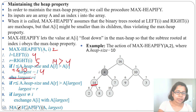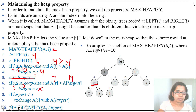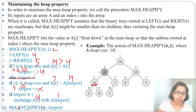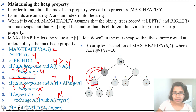Next we check the right child: is 5 less than 10? Yes. A[R] is 7 and A[largest] is 14. Is 7 greater than 14? No, so we skip that part. Then since largest (4) is not equal to i (2), we exchange A[i] with A[largest]: A[2] is 4 and A[4] is 14. We exchange these two nodes — 4 floats down and 14 moves up.